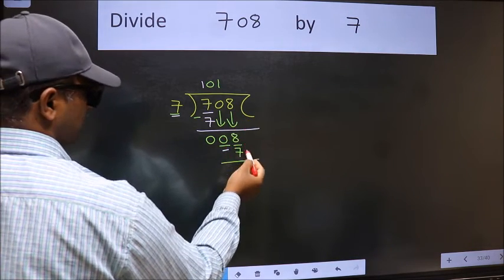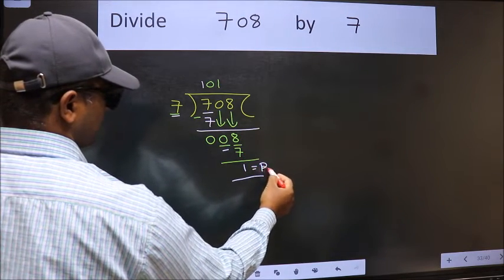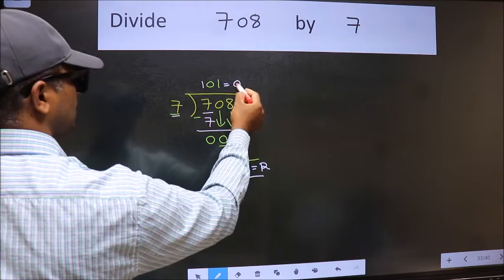No more numbers to bring it down. So we stop here. This is our remainder and this is our quotient.